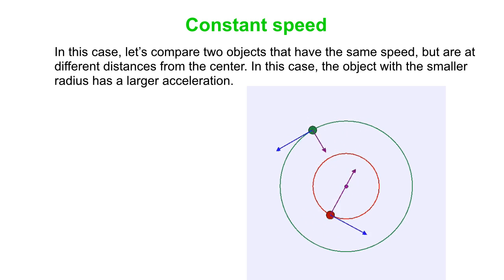Okay, however, in this case, we've got the objects going at constant at the same speed as each other. Okay, so they're different radii, same speed, and now the one closer to the center has the larger acceleration. We expect that because now V squared over r is the appropriate form of the equation to use, and goes as 1 over r.